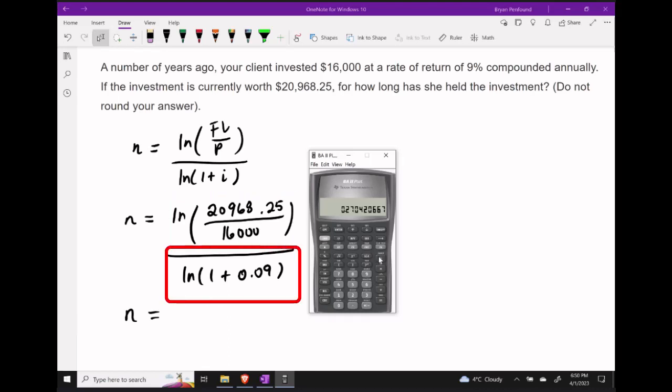I need to divide by 1 plus 0.09. So that's 1.09. Apply the logarithm to this and then hit the equals button.